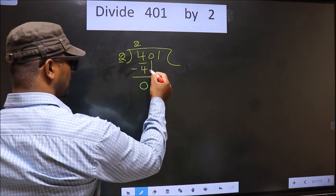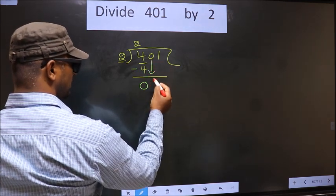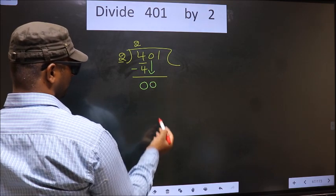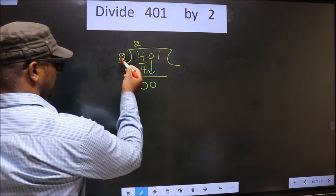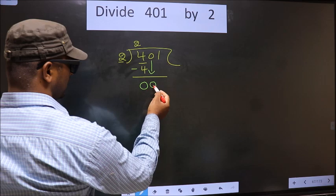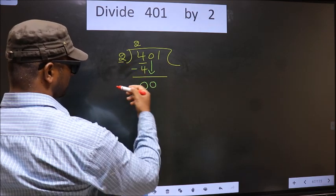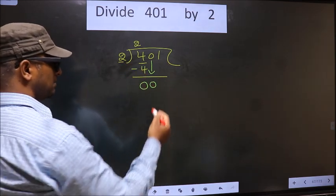Now you bring down the beside number that is 0 down. Now here we have 0, here 2. 0 is smaller than 2. So you need to bring down the beside number.